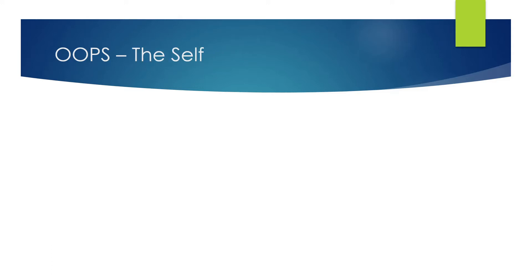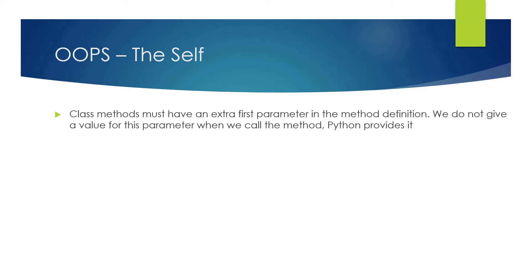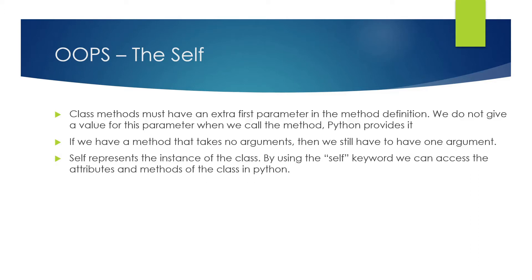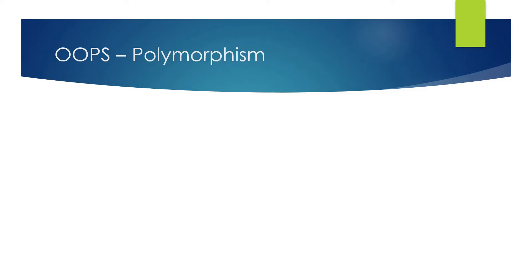Before moving forward, let's talk about 'self', because we're going to use it in our programs today. Class methods must have an extra parameter in the method definition — we do not give a value for this parameter when we call the method; Python provides it. If there is no value, you have to provide 'self' so that the function gets executed. Even if a method takes no arguments, we still have to have 'self'. It represents the instance of the class, and by using the 'self' keyword we can access the attributes and methods of the class in Python.